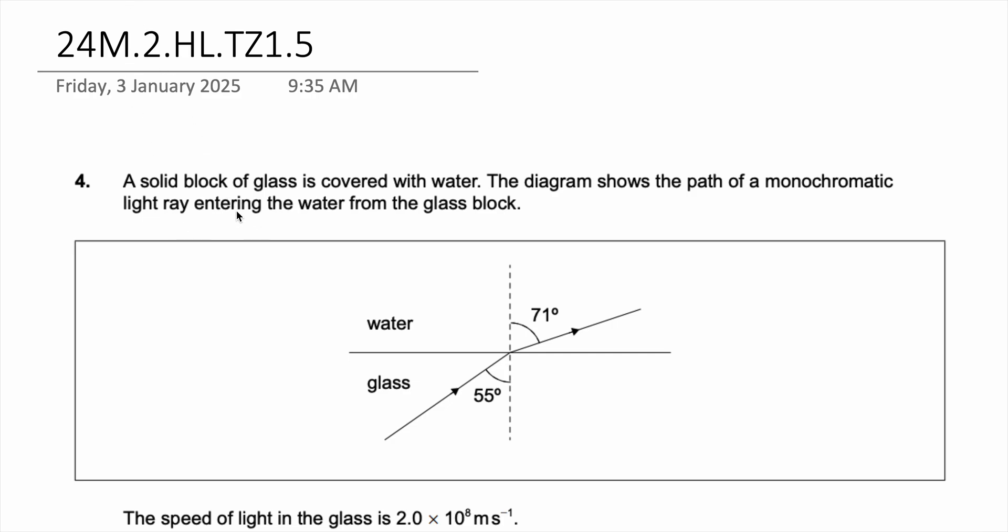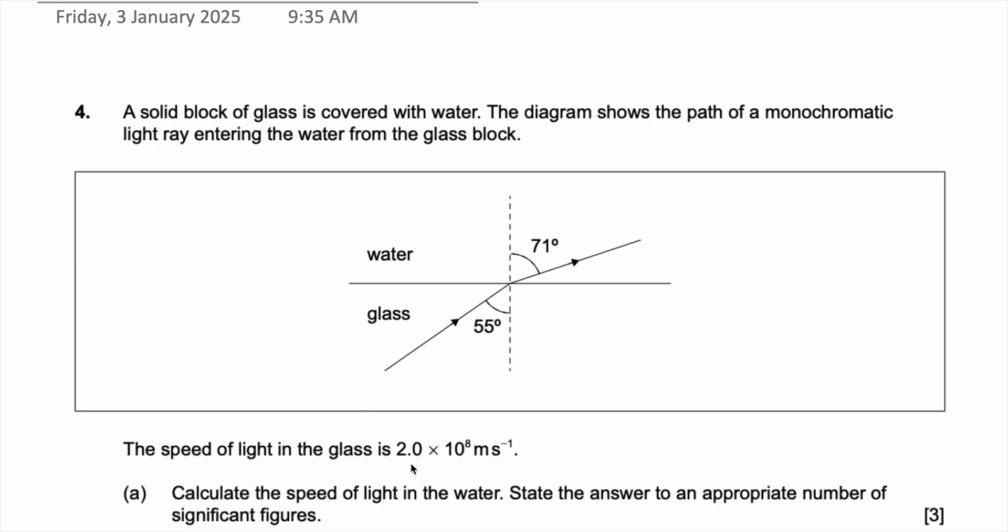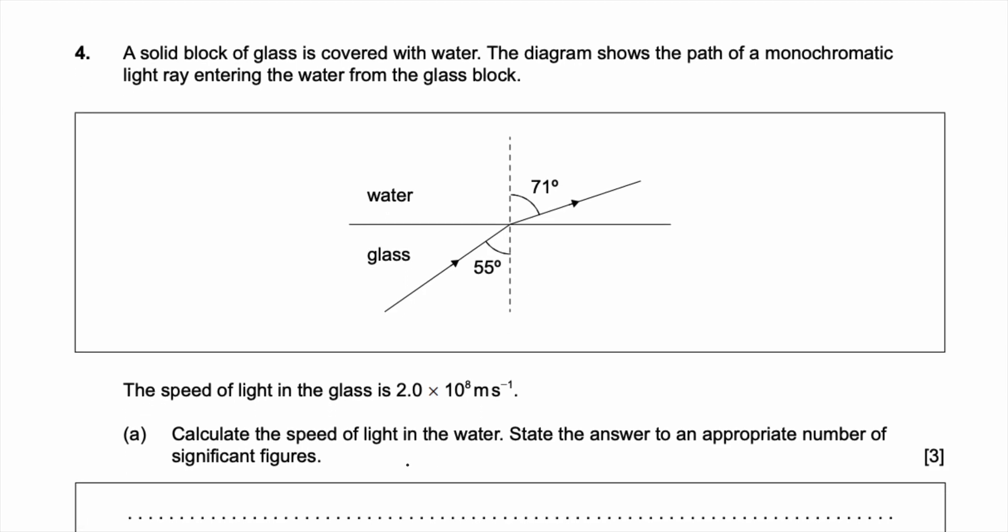Hello everyone, this is your Tutor AB. Today we are going to be solving a problem from the May 2024 IB Physics HL examinations. This is a paper 2 problem. A solid block of glass is covered with water. The diagram shows the path of a monochromatic light entering the water from the glass block. The speed of light in the glass is 2 times 10 to the power of 8 meter per second. Calculate the speed of light in the water. State the answer to an appropriate number of significant figures.